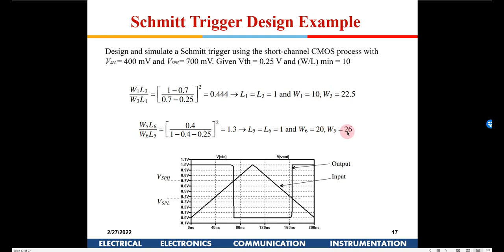Simulating with a triangular input signal confirms the design: the output transitions high-to-low when input reaches VSP_H = 0.7V, and low-to-high when input falls to VSP_L = 0.4V. The two trip points are clearly visible on the output waveform at 0.4V and 0.7V from the y-axis.